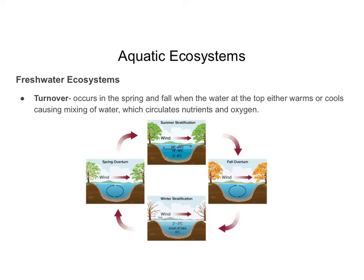Turnover occurs in the spring and fall when temperatures are changing — going from summer to winter or winter to summer. The warm water that was at the top and the cold water at the bottom start to mix, and that mixing circulates nutrients and oxygen. In winter most of the lake is cold, and in spring when the ice layer melts, you get that circulation again. Turnover happens in both fall and spring.